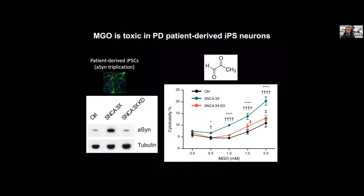We used a series of model systems to understand what glycation could be doing. Using patient-derived iPS cells from patients that carry a triplication of the alpha-synuclein gene — so these are Parkinson's patients expressing alpha-synuclein at higher levels — we treated these cells or control cells where we knocked down alpha-synuclein back to control levels. We found that exposing the cells to increasing concentrations of methylglyoxal increased cytotoxicity, and the cells with the triplication were more sensitive to methylglyoxal.